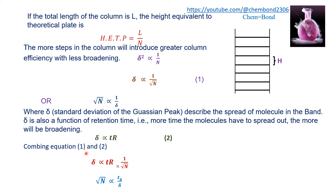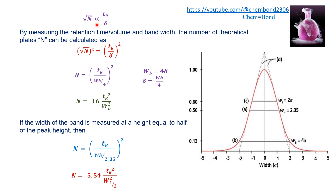Combining the two relationships — sigma is proportional to TR (retention time) and sigma is proportional to 1 over the square root of N — we get: the square root of N is proportional to TR divided by sigma. We can calculate the number of theoretical plates by measuring bandwidth and retention time. Squaring both sides gives N = (TR / sigma) squared.